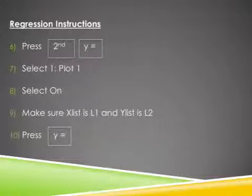After that, I want you to hit the Second key again, and Y equals. And when you do that, the title on this screen should say Stat Plot. And it should say 1, Plot 1, 2, Plot 2, 3, Plot 3, 4, Plot 4. Do you guys have that screen? All right. We're going to select the first one, 1, Plot 1. And we're going to make sure that all of our lists and everything look correct.